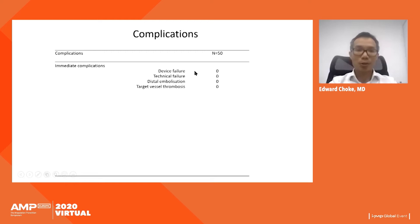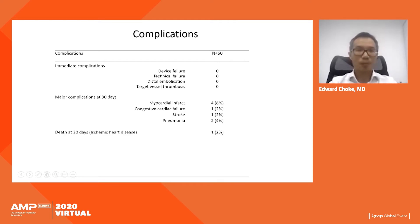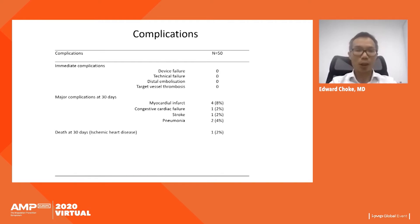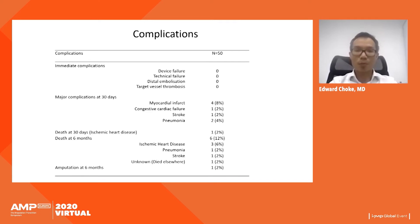For immediate complications, there was no evidence of device failure, technical failure, distal embolization, or target vessel thrombosis. At 30 days, major complications included myocardial infarction in four patients, congestive cardiac failure in one, one stroke, and two pneumonias. At 30 days, one death from ischemic heart disease. At six months, there were three deaths from ischemic heart disease, one from pneumonia, one from stroke, and one death of unknown cause elsewhere.